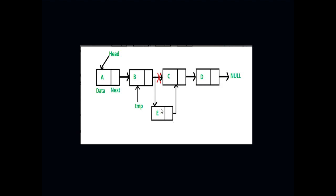Now we want to insert a new node with actual data 'e'. To get this node inserted into the linked list we need to make a few changes regarding the links. To insert it at position three, or after 'b', we need to redirect the link to 'e' and the link from 'e' to 'c'. The next pointer of 'b' will now point to 'e', and the next pointer of 'e' will point to 'c'. This is the basic concept behind inserting a node after a given node.